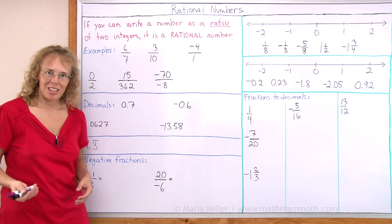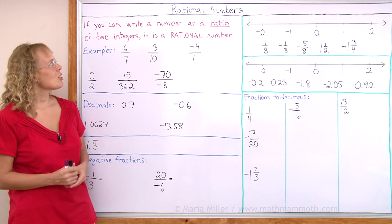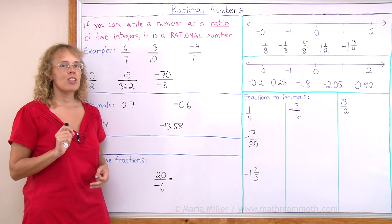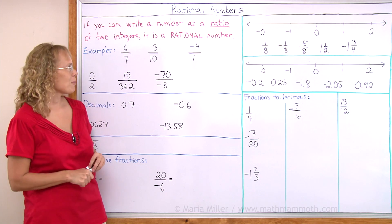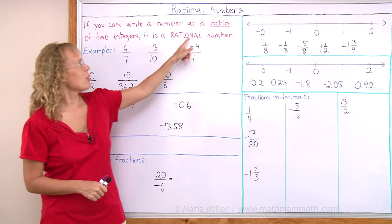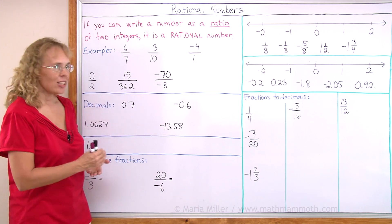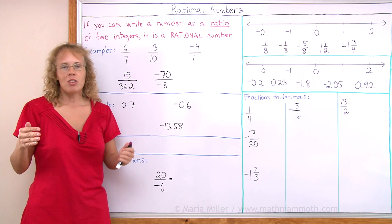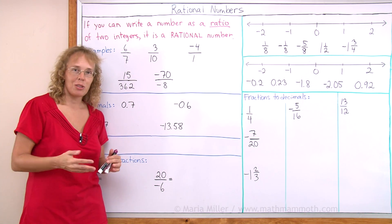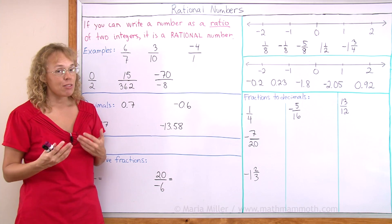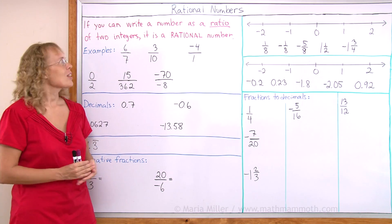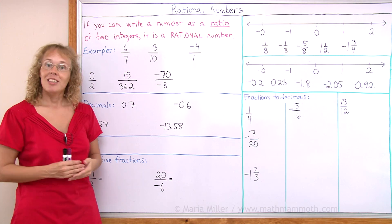What is a rational number? The name kind of tells you: if you can write a number as a ratio of two integers, then it is a rational number. So rational comes from ratio. If you've studied ratios, you remember they were things like 3 to 5, 4 to 7, 7 to 4. And we often write ratios using a fraction line. So actually, rational numbers end up being fractions.